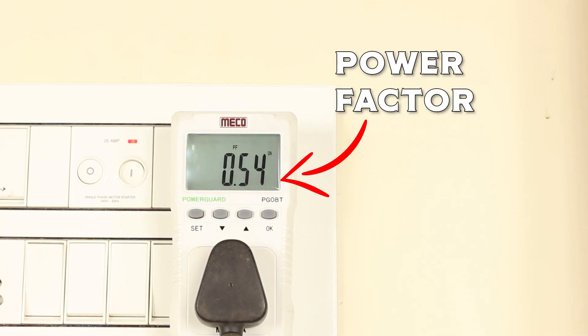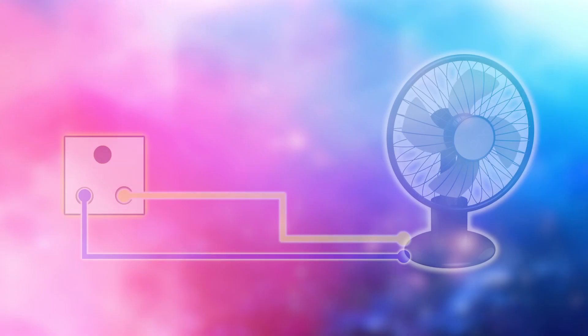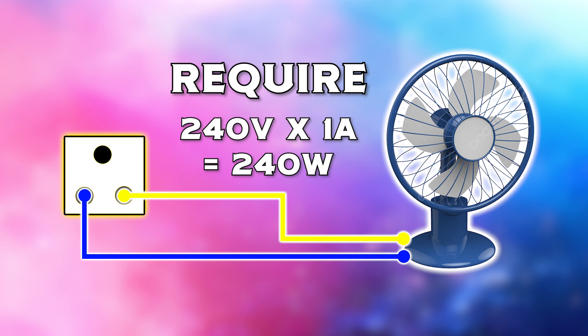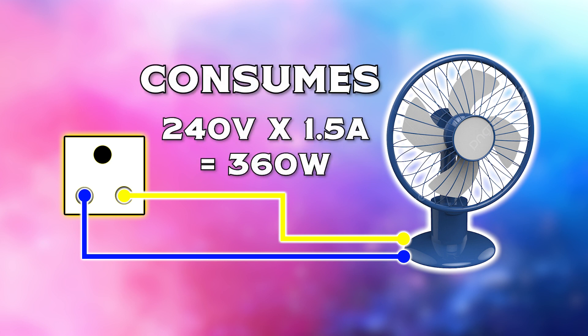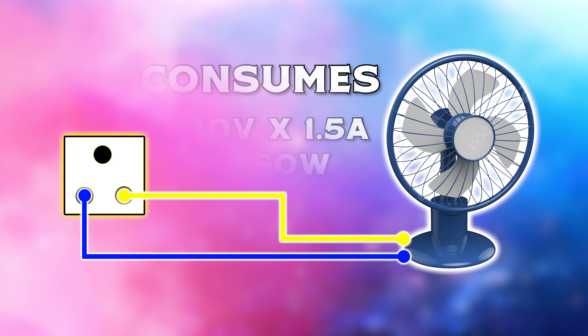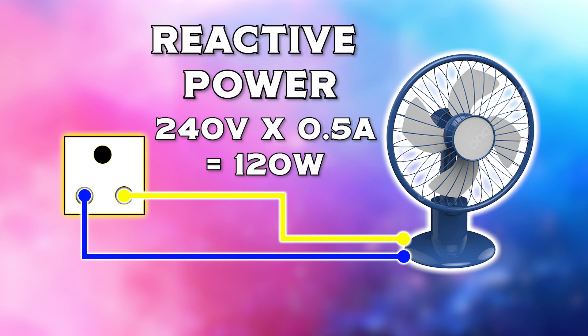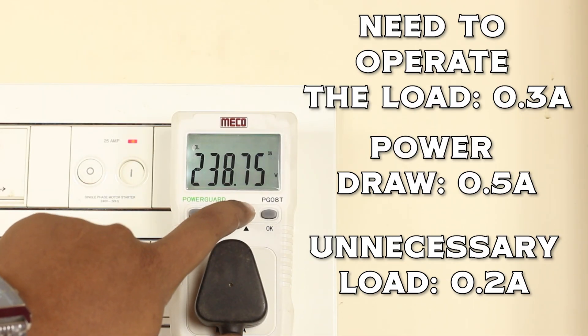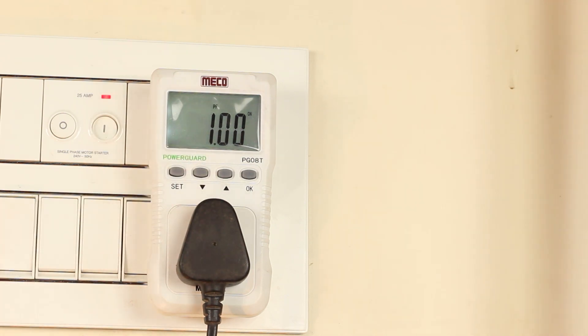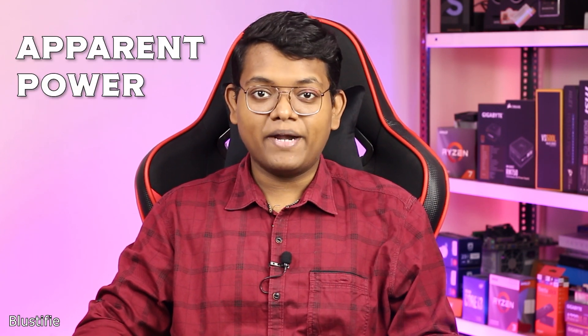For example, if a load requires 1A to do the job but it's an inductive load, it will draw 1.5A of current — but the extra 0.5A is reactive power, so you won't need to pay for that, but it does load the power lines. We always want the power factor to be 1 so that all the transmitted power is used. The combination of active and reactive power is known as apparent power.